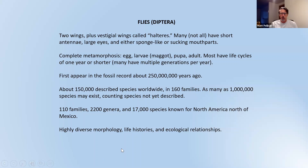The defining characteristic of this order is that they only have two wings. Every other kind of insect has four wings, although they don't always necessarily show it, but flies have just two as adults. They have these two little vestigial things that look like little lollipops in their armpit called halteres. Generally speaking, flies have short antennae, though that's not true of the more primitive groups. Most flies have either sponge-like or sucking mouth parts, though a lot do bite and have straw-like piercing mouth parts.